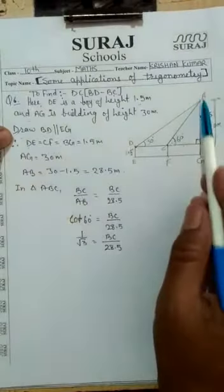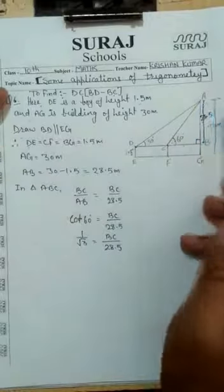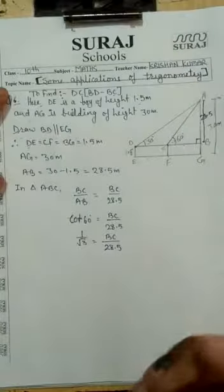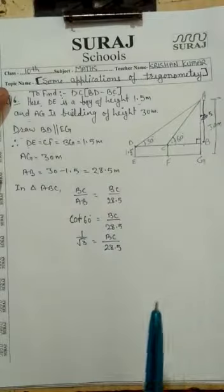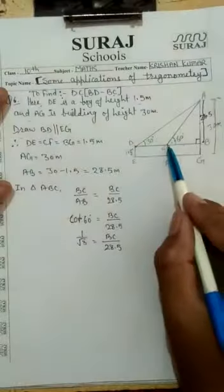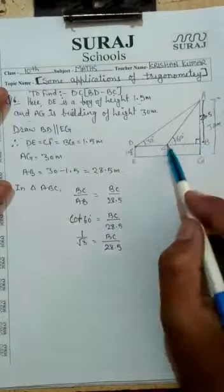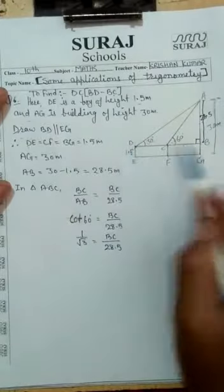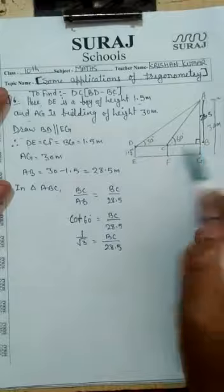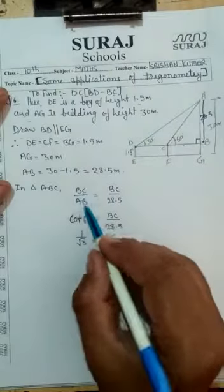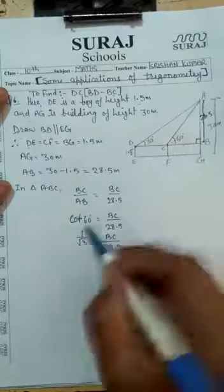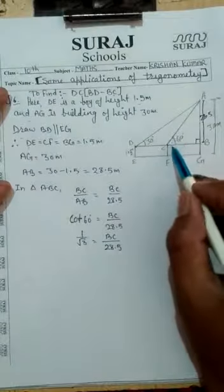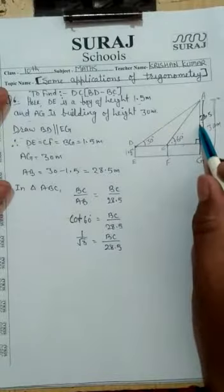Now we work in triangle ABC. The side given is AB, and we need to find BC. The ratio of the sides will form a trigonometric ratio. BC is the adjacent side to angle 60°, so it is the base, and AB is the opposite side, so it is the perpendicular. Base upon perpendicular gives cot 60°. So cot 60° = BC upon 28.5.